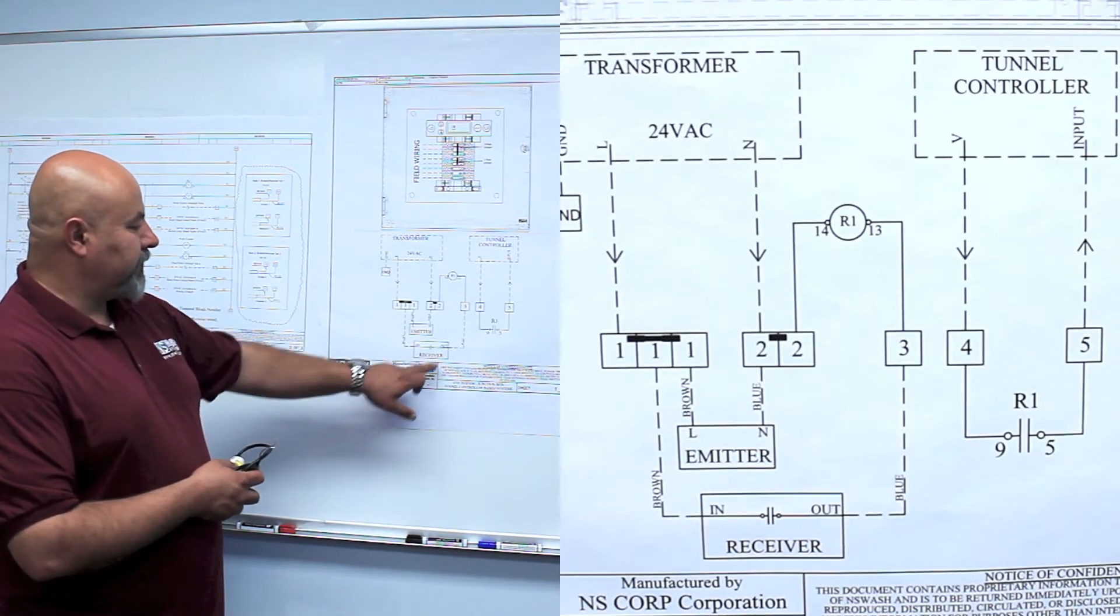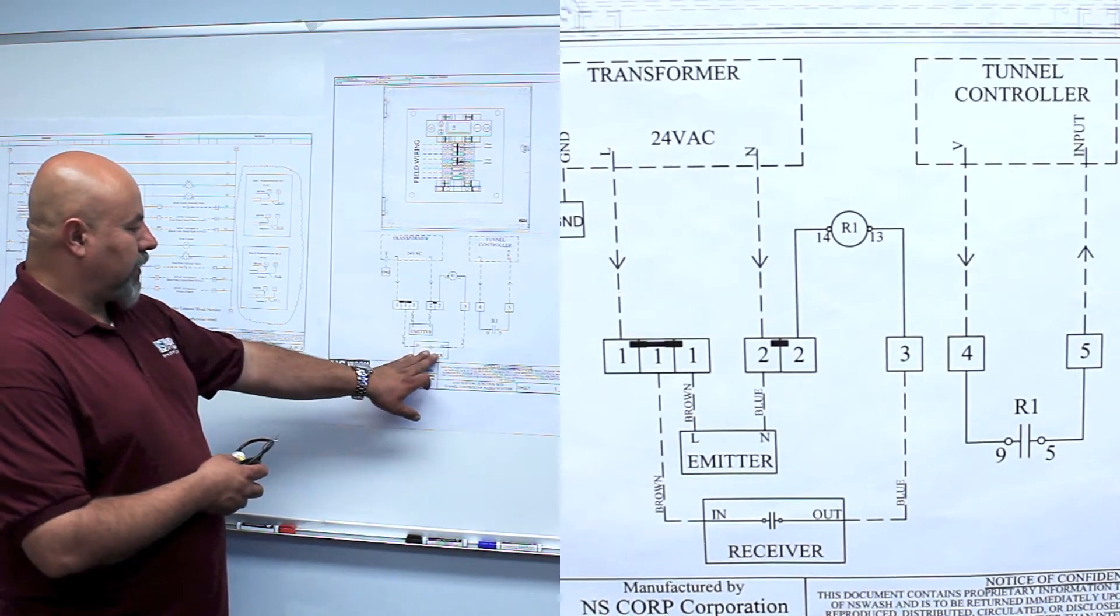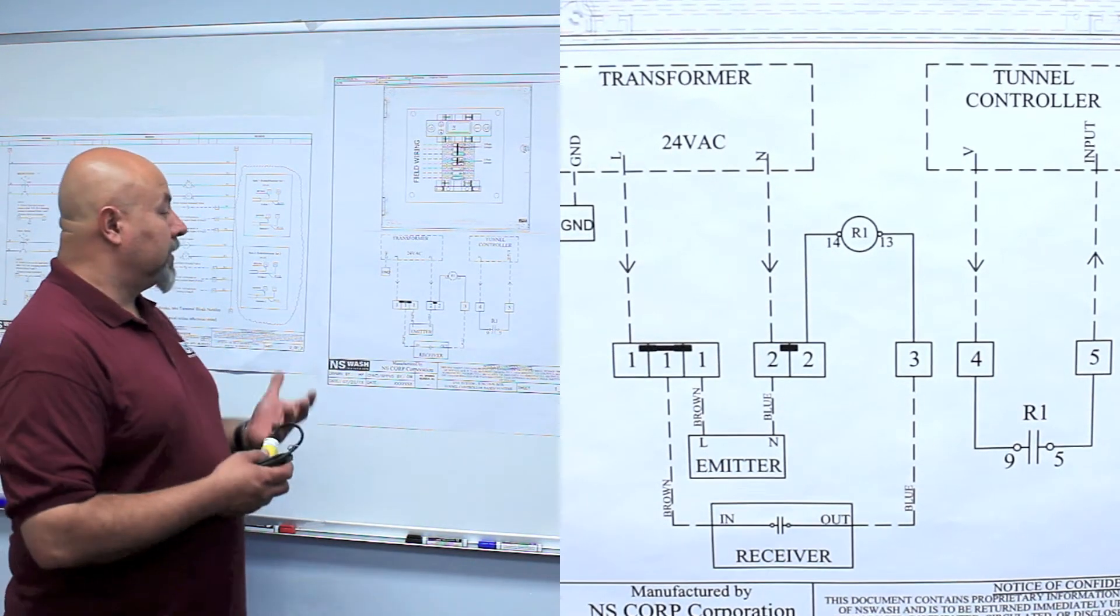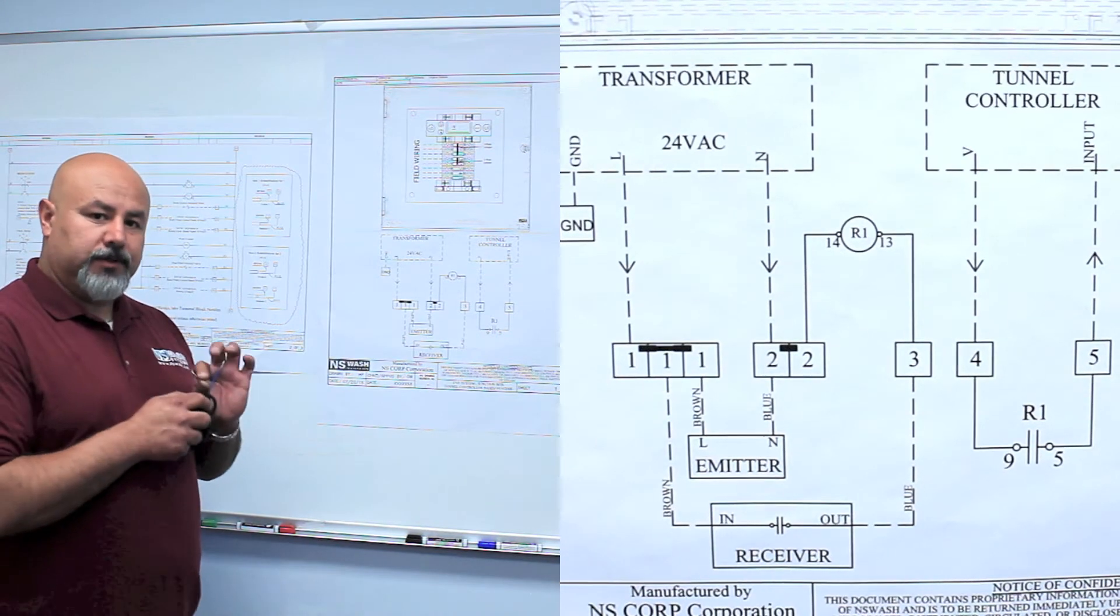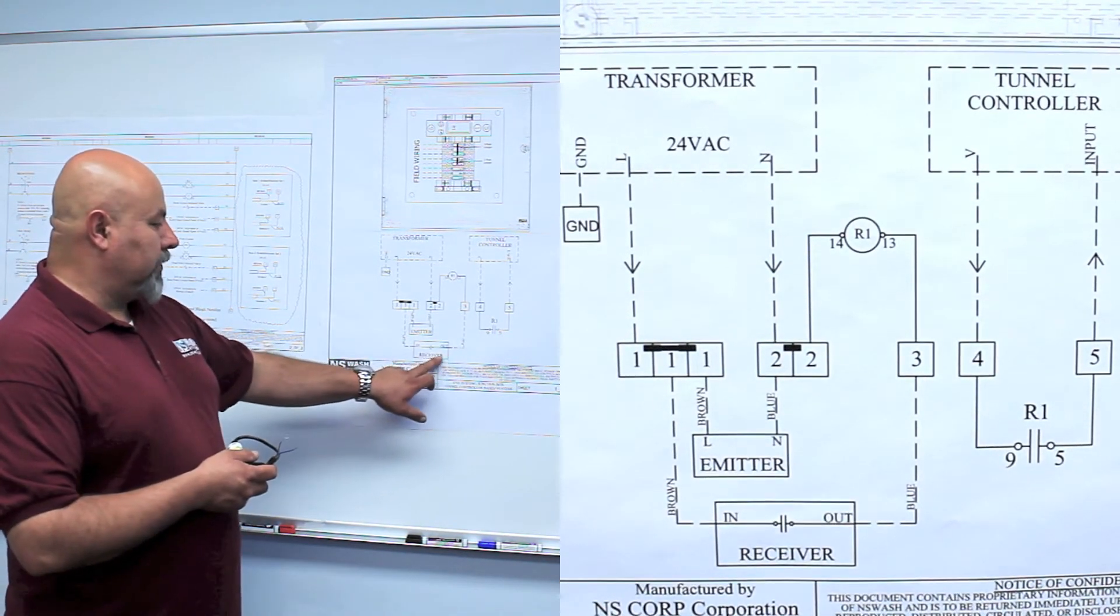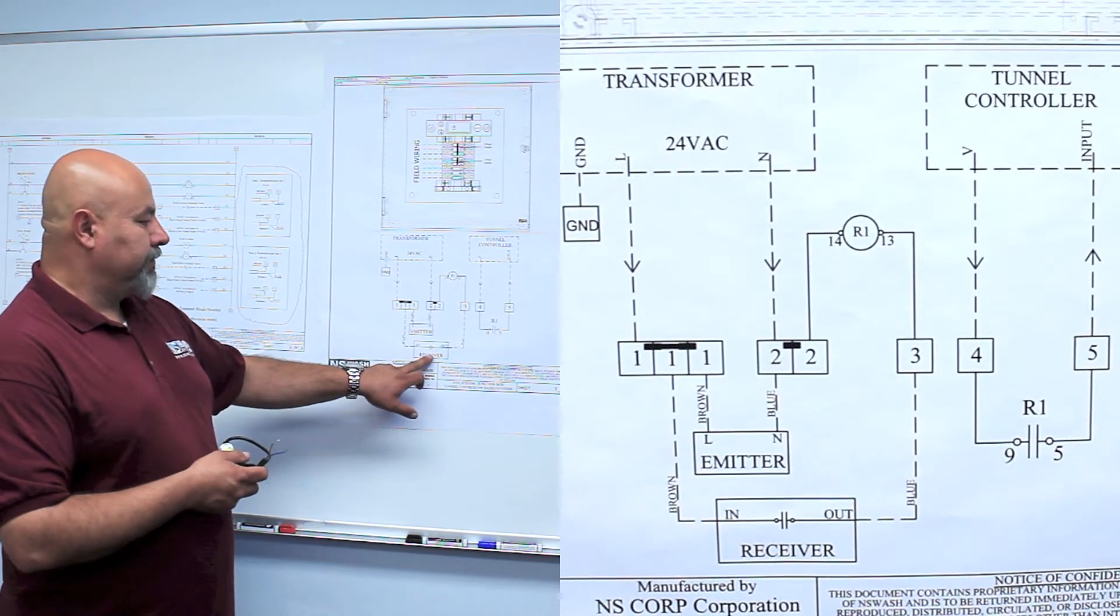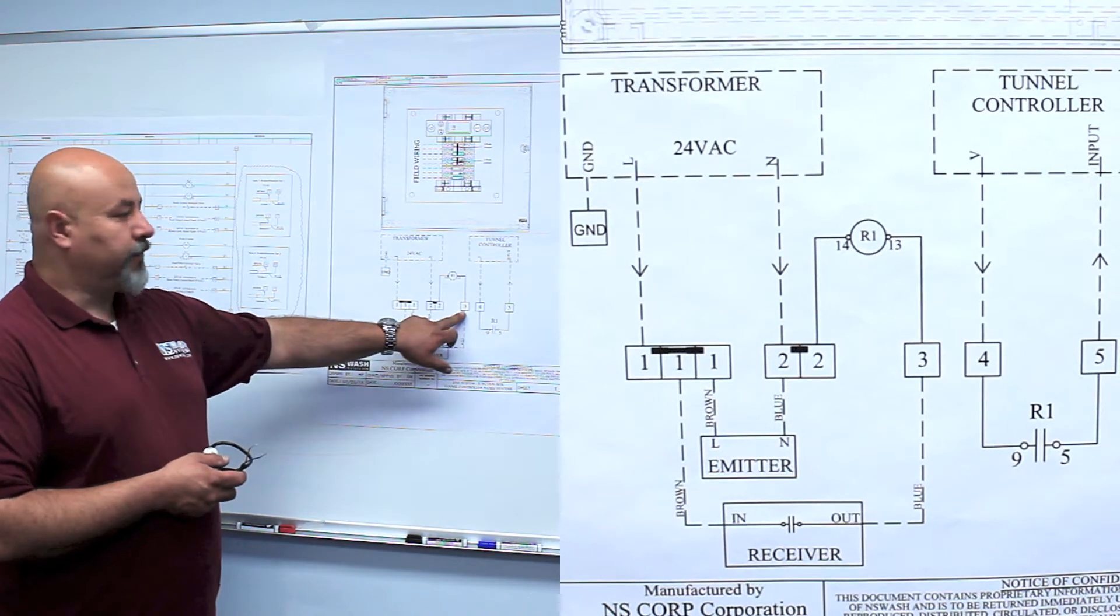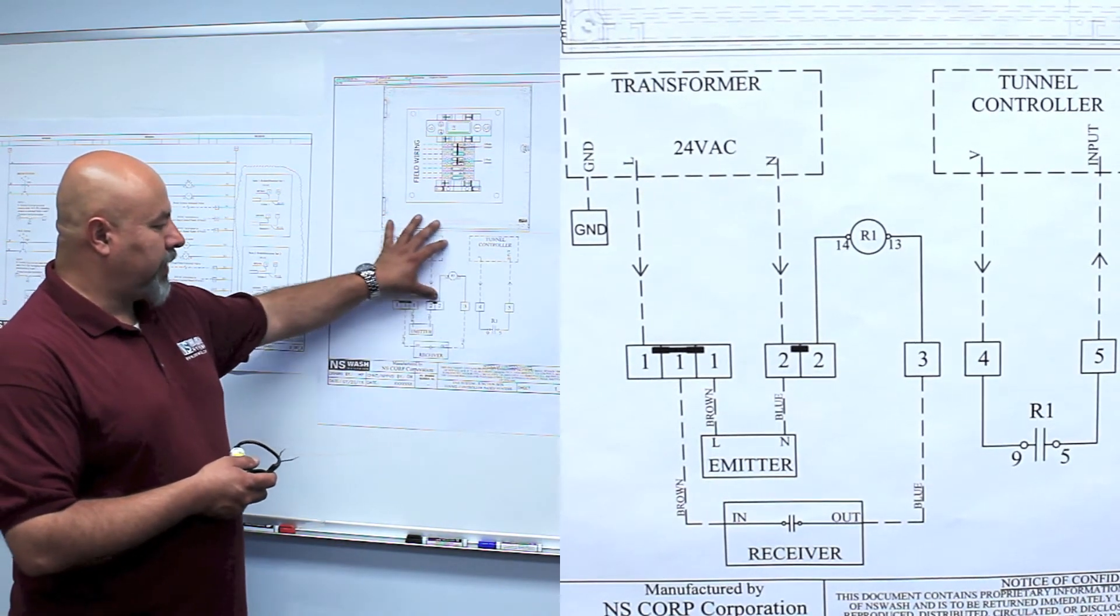The receiver photo eye, the brown wire goes to terminal number one. Again, that's the load because all the brown wires are always to load, the hot side. The other side of the receiver photo eye is the blue wire. The blue wire is going to terminal number three. This is a very simple little panel.